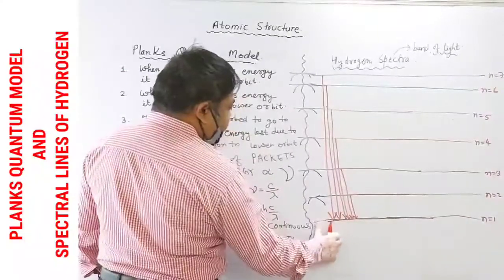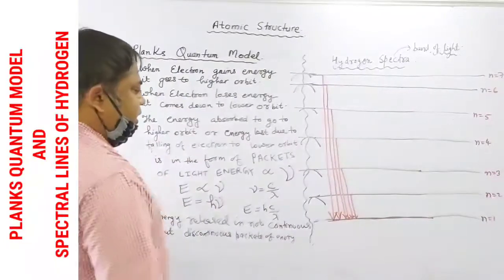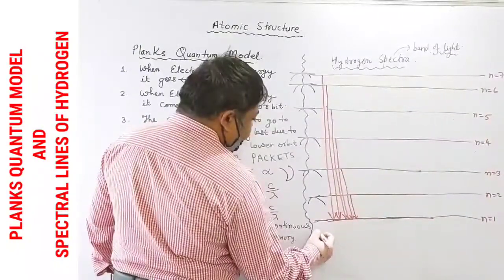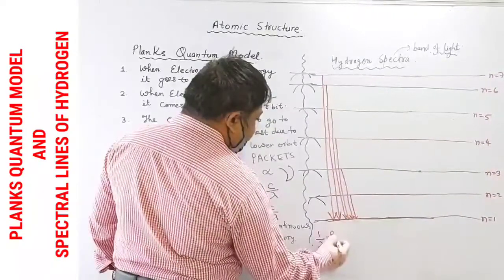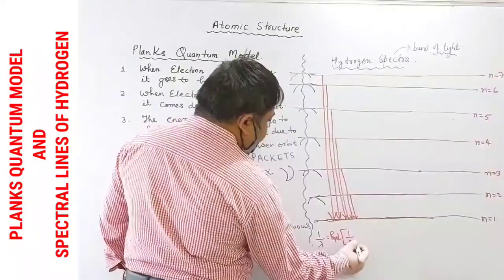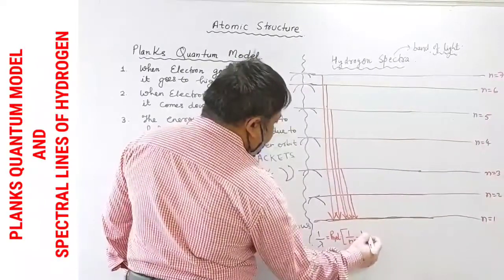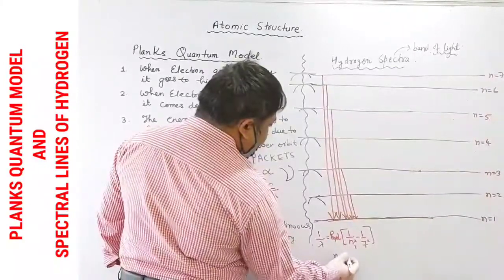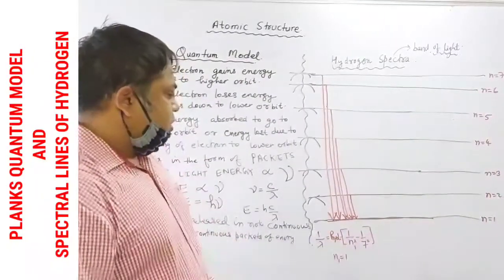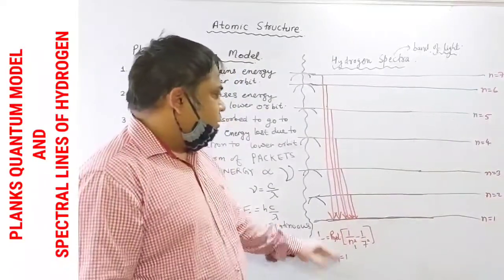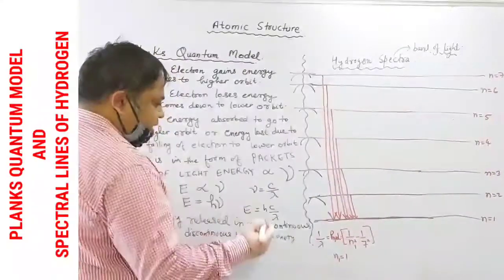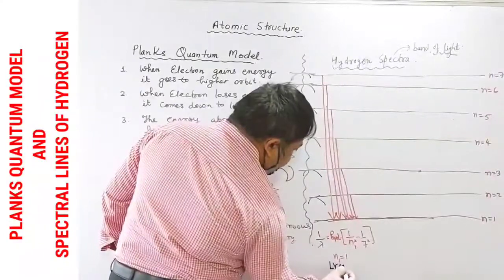So the wavelength associated with these transitions would be n one will be one and n two will be the highest will be seven. So we can write this as one by lambda will be equal to Rydberg constant one by n one square is one square minus one by seven square where for n one we can write n one equal to one. So if you are asked to find out the wave number of transition of electrons in the first series, then we will find it out in this way. This series is called as Lyman series, L-Y-M-A-N.